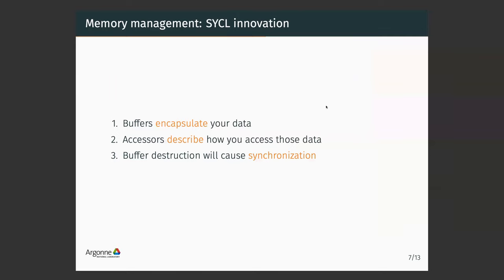The big novelty in SYCL — really one of the core concepts — is memory management. In SYCL, you have your data and you need to encapsulate it into a buffer. Then you need to create what they call an accessor to describe how you will access your buffer. For example, you can create an accessor to just read, an accessor to read-write, an accessor to write all the arrays. Because the runtime knows how you will access your data, it can do optimizations. If you read your data in two different kernels and never read it from the host, it knows it can just leave the data on the GPU and avoid data transfers.